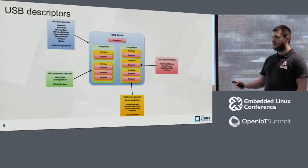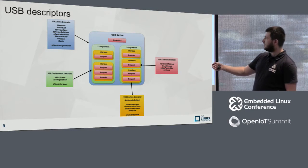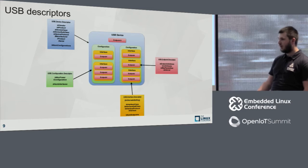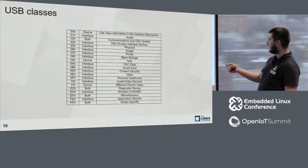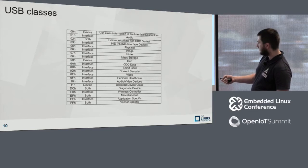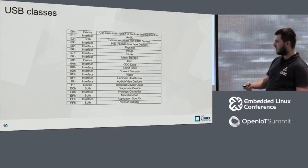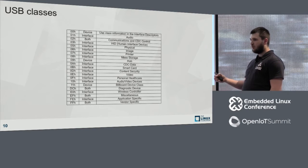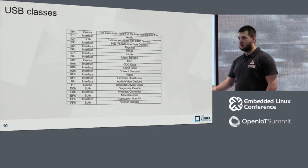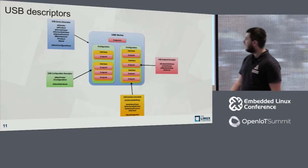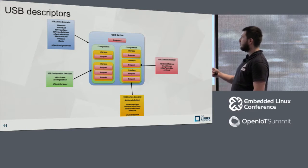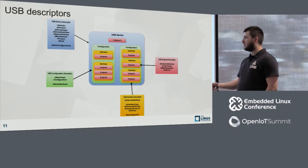Common USB classes include mass storage (pen drives), audio, application-specific, vendor-specific (used for Arduino and custom USB functions), and human interface devices like mice and keyboards. The device descriptor also contains three optional strings: manufacturer, product, and serial number. Be careful with serial numbers on cheap devices — they often use trivial values like 1, 2, 3, 4, 5.